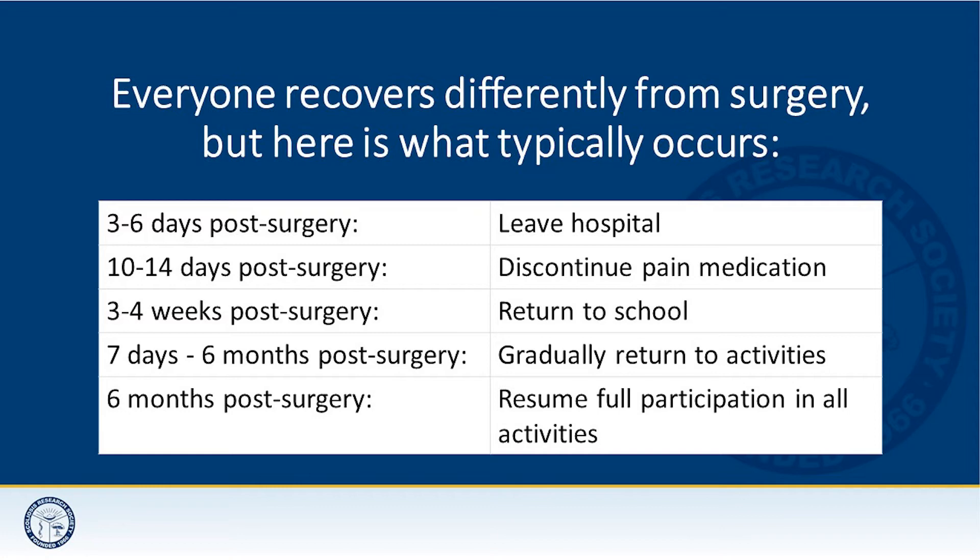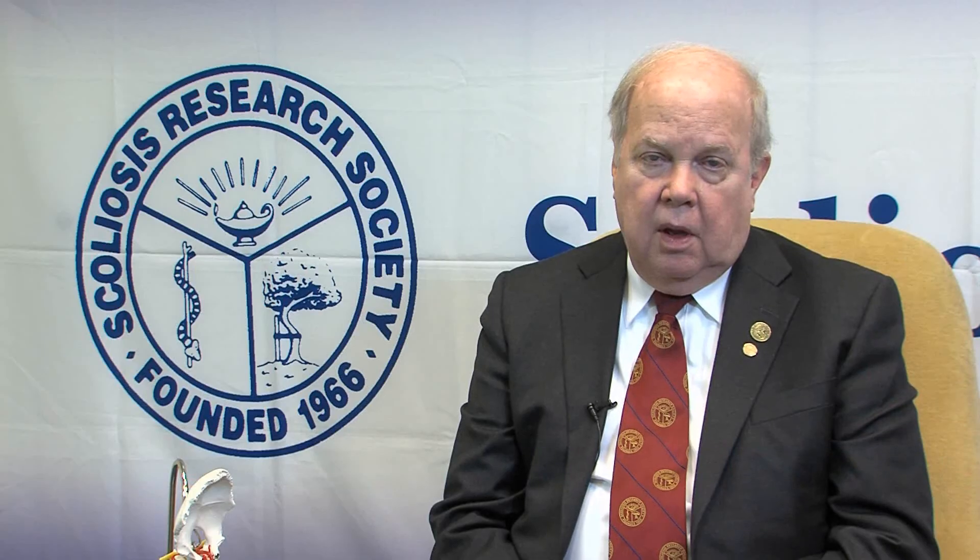At about the five-month period, a decision is made as to what normal activities they can return to. For the majority of patients, they can return to gym, basketball, volleyball, and baseball at about that time. If they're going to be involved with high-velocity contact sports such as football or hockey, we sometimes ask them to wait one year before returning to those activities. It's usually not recommended, but for some children it's important and we will allow it under those circumstances.